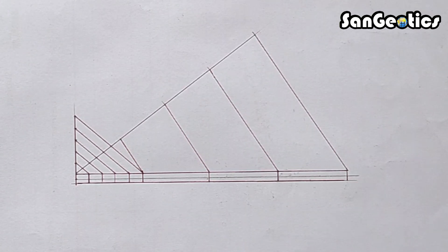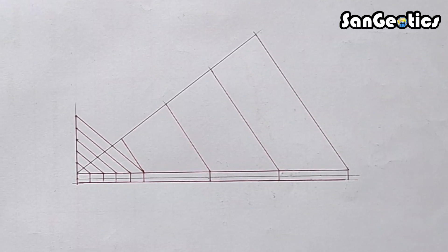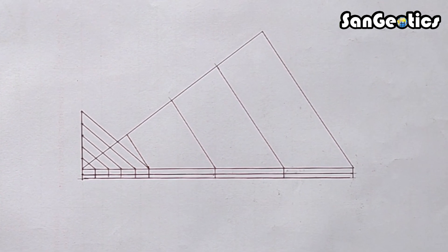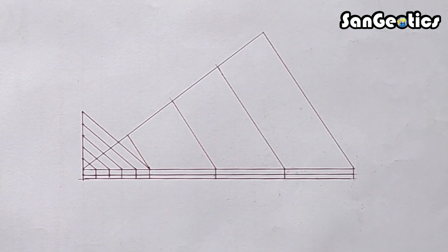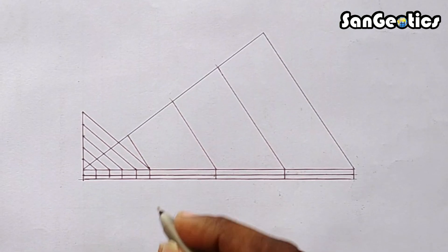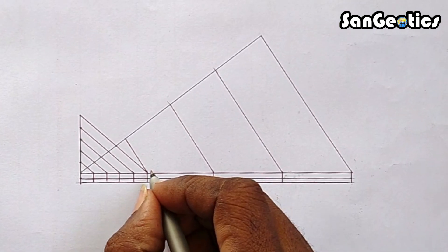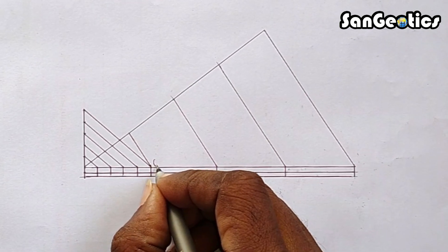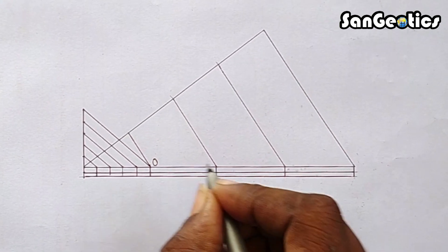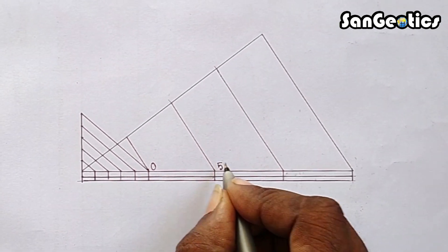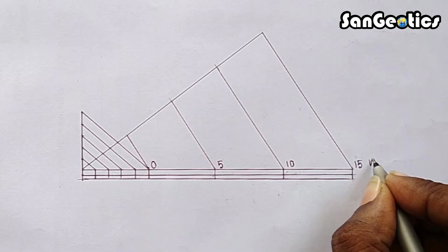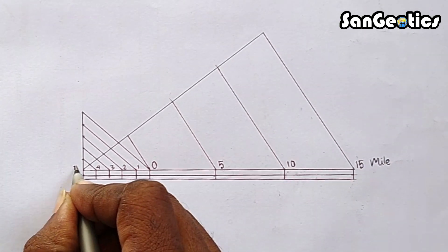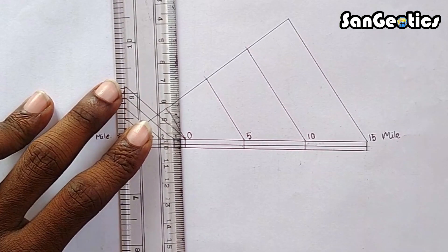The first primary division on the left side is divided into secondary divisions to show shorter distances. Zero is written at the left of the scale but to the right of the secondary division. Primary and secondary division distances are marked on the right and left of the scale respectively as 0, 5, 10, 15 kilometers, and 1, 2, 3, 4, 5 kilometers.